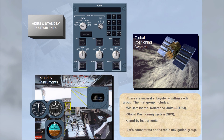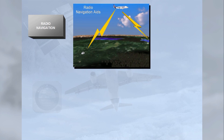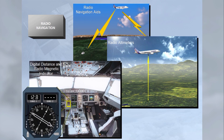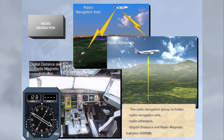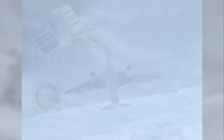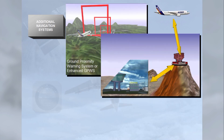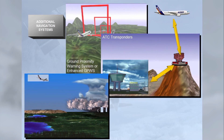The radio navigation group includes Radio Navigation Aids, Radio Altimeters, and Digital Distance and Radio Magnetic Indicator, DDRMI. The additional navigation systems include Ground Proximity Warning System, GPWS, or Enhanced Ground Proximity Warning System, EGPWS, ATC transponders, and Weather Radar.